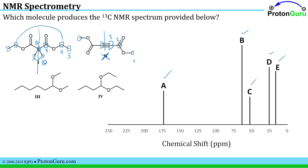Next I could take a look at compound 3. These two groups are the same as one another because you can rotate around that bond and convert them between one another, but the whole molecule is not symmetric. So I would expect those two methyl groups together to give me one signal, this carbon a second signal, then a third, fourth, fifth, sixth, seventh signal. That's too many signals, so I can rule out compound 3.